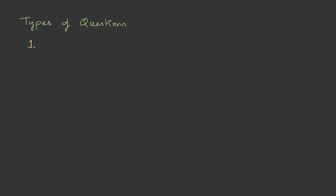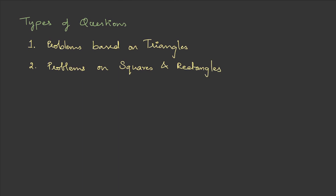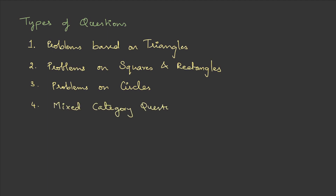The first type is problems on triangles, the second is problems on squares and rectangles, the third is problems on circles, and the fourth is mixed category questions — for example, they'll give you the area of a square and a circle, or a triangle and a rectangle, where one figure is inscribed into the other, and so on.